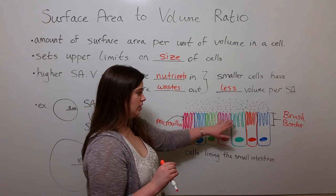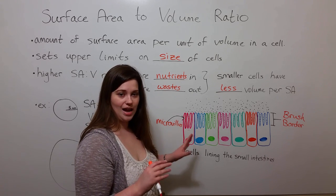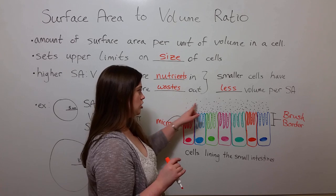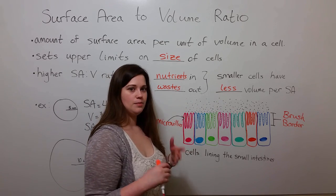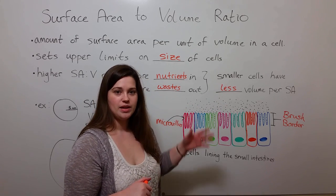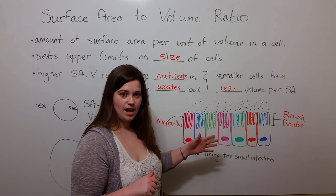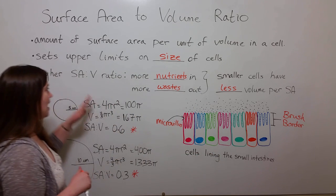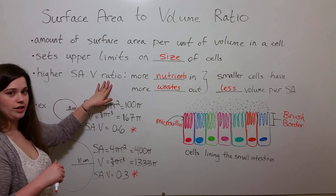And you can see that all of these finger-like projections out of the cell greatly increase each cell's surface area. And they allow the brush border of the lining of the small intestines to absorb nutrients much more effectively, because they have that larger surface area, and in turn, a higher surface area to volume ratio.